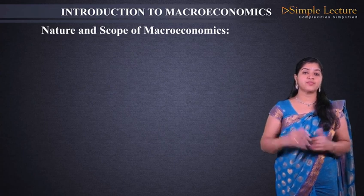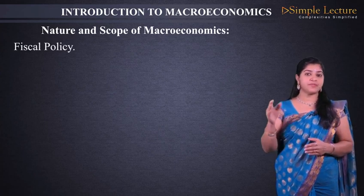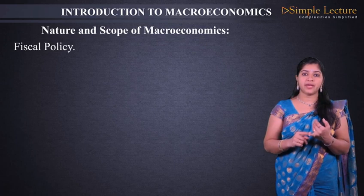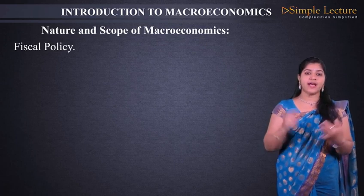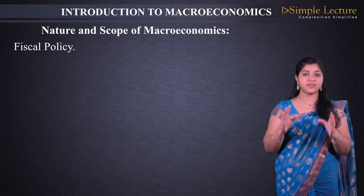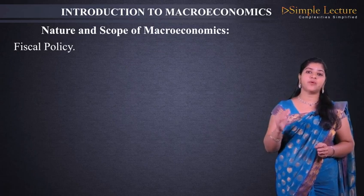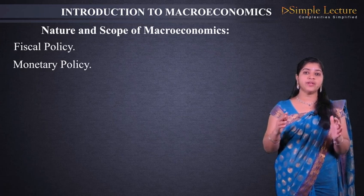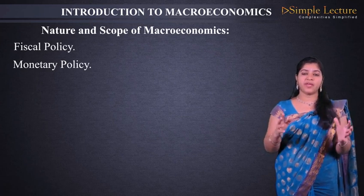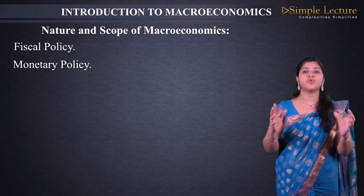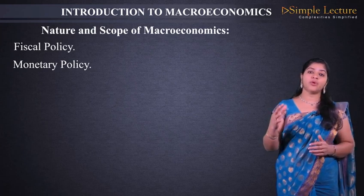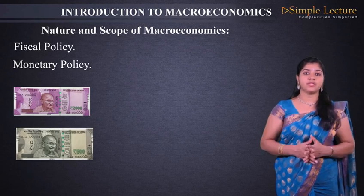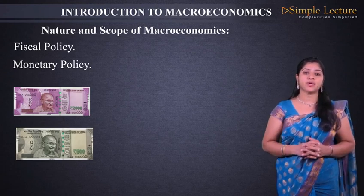The policies of the government — mainly fiscal policy. In fiscal policy the government makes policies on government revenue, government expenditure, and government debt. These three are studied under fiscal policy, which is also an important objective studied under macroeconomics. Next is monetary policy — related to money policy, specifically what kind of control the RBI exercises over money situations, such as currency notes being stopped and new notes coming — this also comes under the monetary policy of the RBI and is studied under macroeconomics.